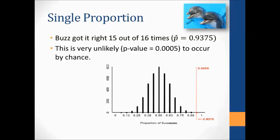Buzz got it right 15 out of 16 times — 93.75% of the time. We developed a null distribution by flipping coins: we flipped 16 coins, and if it landed heads, we called that a correct guess and tails an incorrect guess. We looked at the proportion of those 16 flips that landed heads. A lot of the time it was around 50% heads, and not very many times did the coin get 15 heads out of 16 or more. That was our p-value.